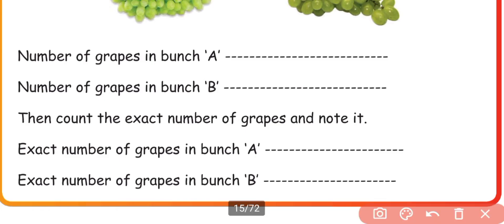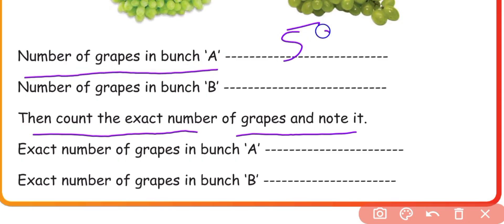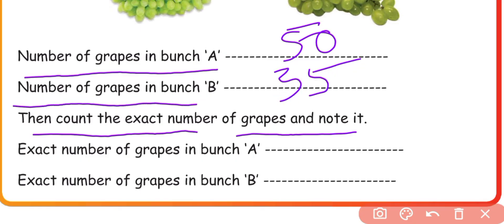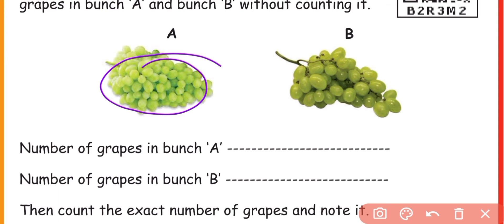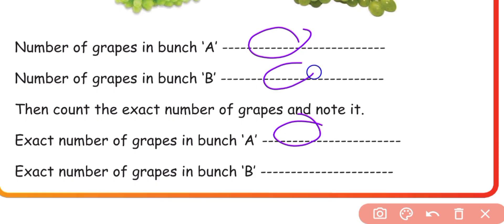Then count the exact number of grapes and note it. Guess the number of grapes in Bunch A and Bunch B. The estimated number of grapes in Bunch B is 35. Count and write — the exact number may differ. That difference is what we call Estimation.